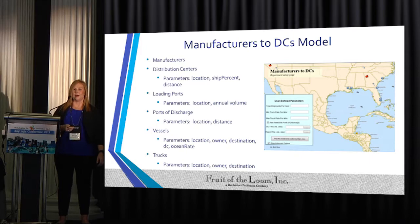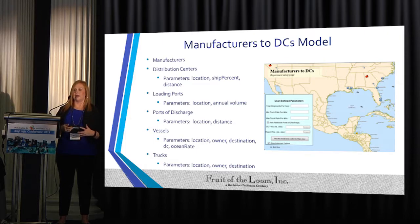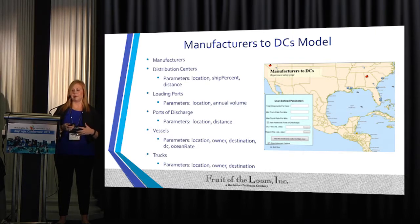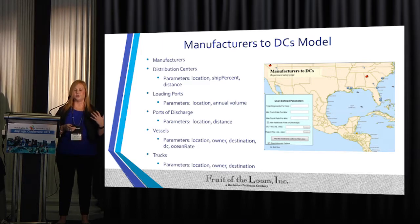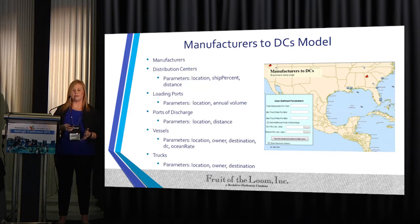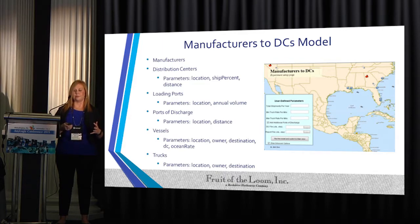We extended this model from the domestic supply chain to the international supply chain, because our company has multiple different ocean rates associated with shipping costs that we wanted to account for. In this agent-based model, the manufacturers-to-DCs flow was paramount. Now we have manufacturers, distribution centers, loading ports, ports of discharge, different vessels with ocean rates, and trucks associated with that. This allows us to put the whole international supply chain in and determine the most optimal distribution center location based upon all of this information.